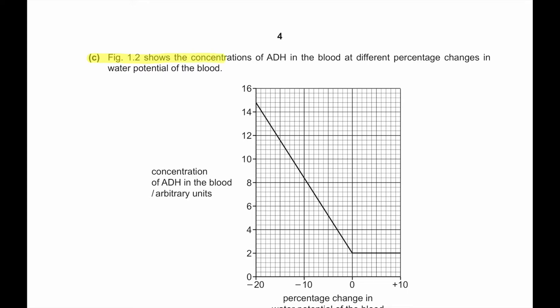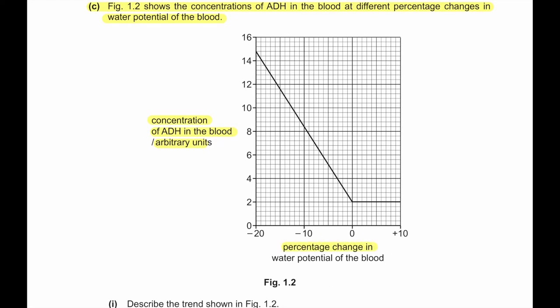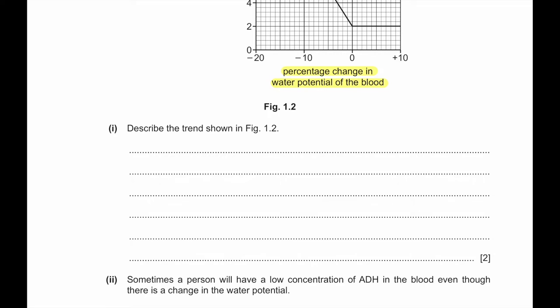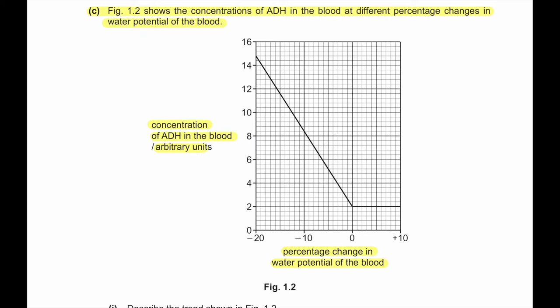Part C. Figure 1.2 shows the concentration of ADH in the blood at different percentage changes in water potential of the blood. We can see that as the concentration of ADH in the blood is decreasing, the percentage change in water potential increases. So as the water potential of the blood increases, concentration of ADH in the blood decreases.